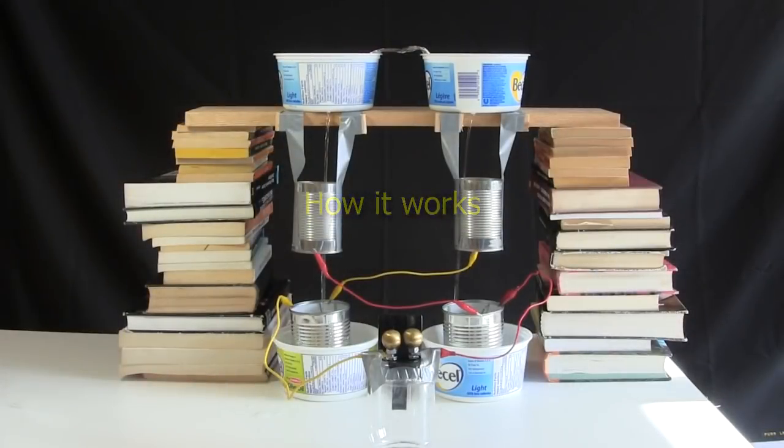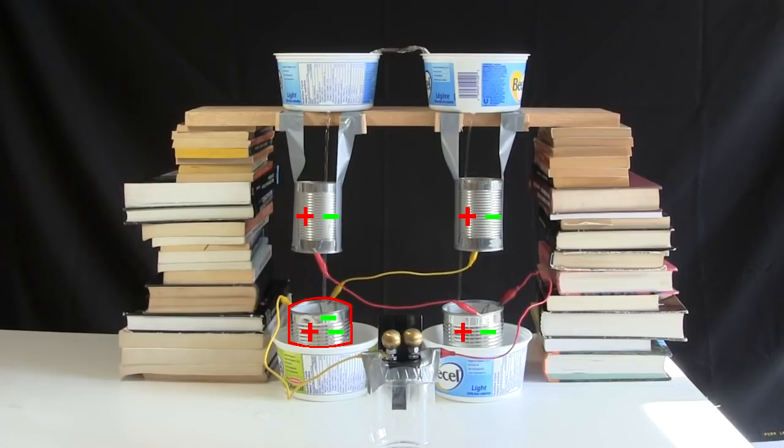How does it work? Well, in a perfect world, these cans all have equal positive and negative charges, but usually one of them has a slight imbalance. Let's say this one happens to have more negative charges than positive charges, so it's negatively charged. Notice that it's wired up to this other can, so it's negatively charged too.